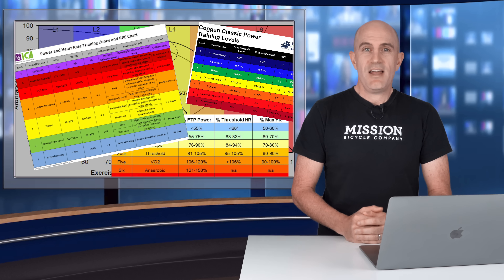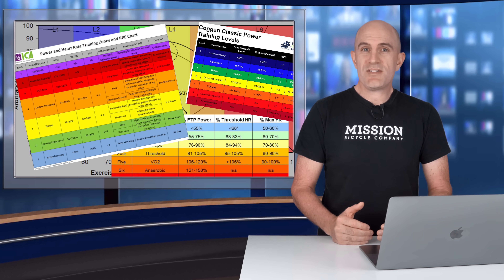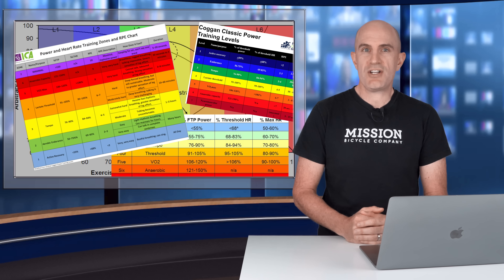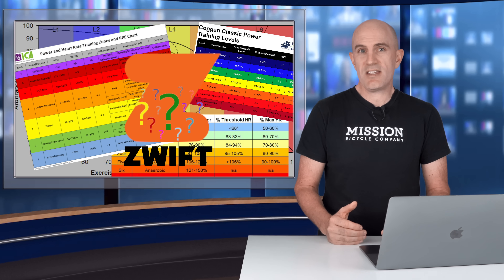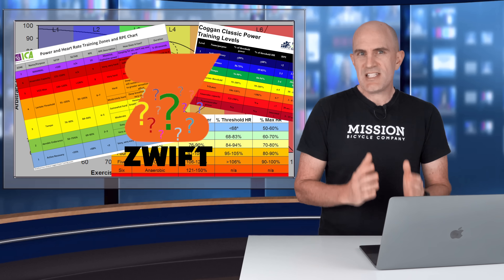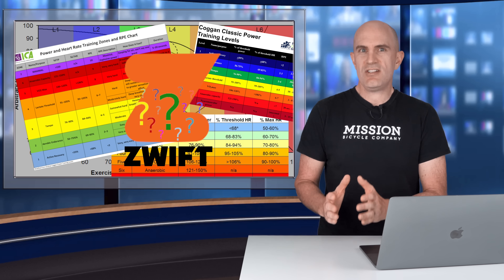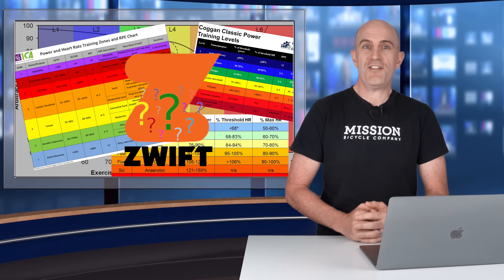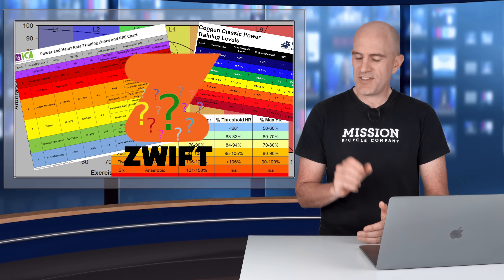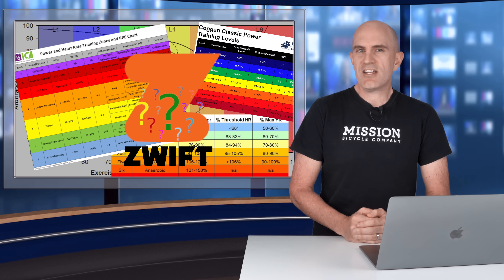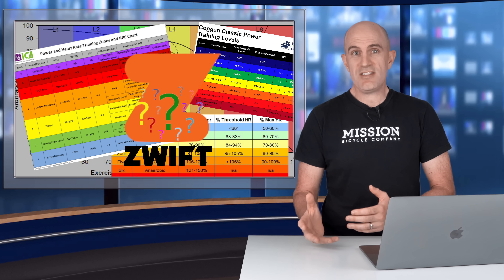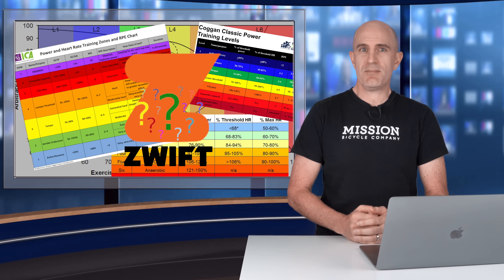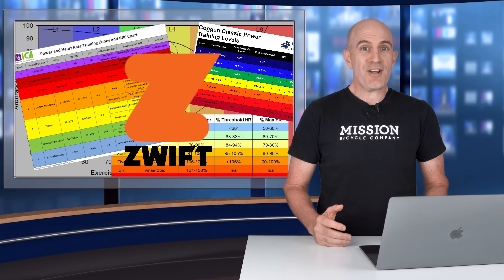These power zones are calculated based on a percentage of your FTP, your functional threshold. Somebody asked this week what specific zones as a percentage do these relate to in Zwift. I searched high and low for the answer — I could get the definitions, the colors, and the zones, but not the specific numbers.